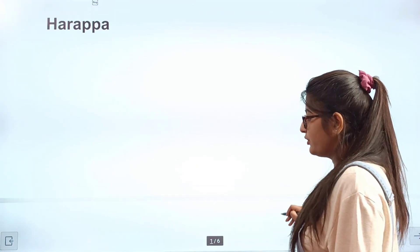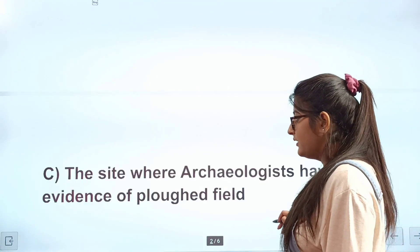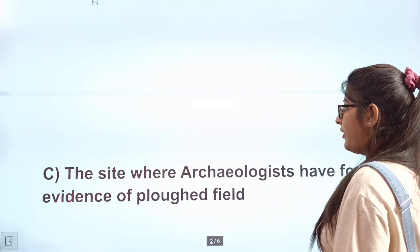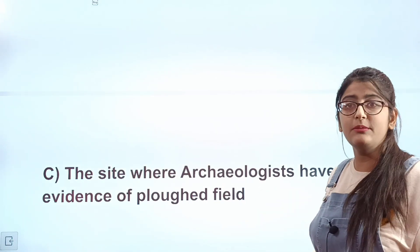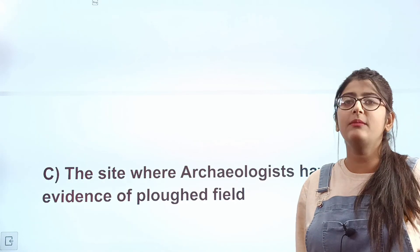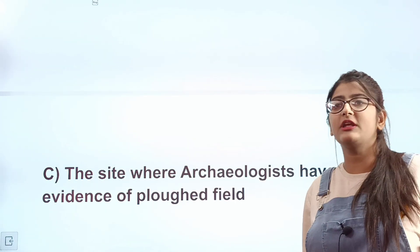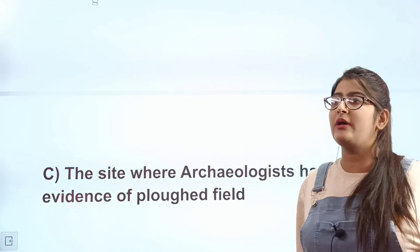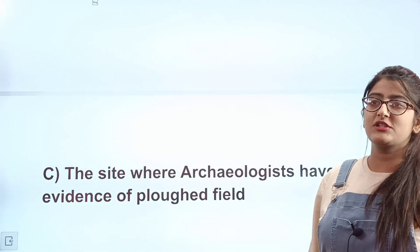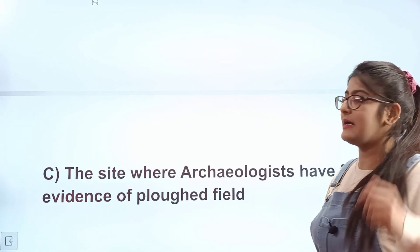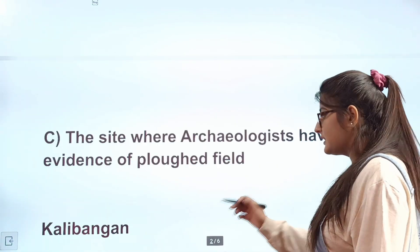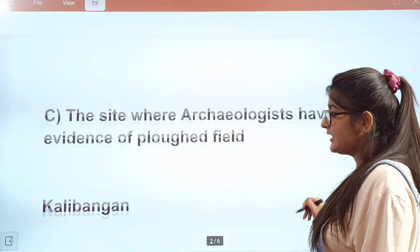Let's see question number C. The site where archaeologists have found evidence of a ploughed field — where was the ploughed field found? This is the C marked location, and the correct answer is Kalibangan.